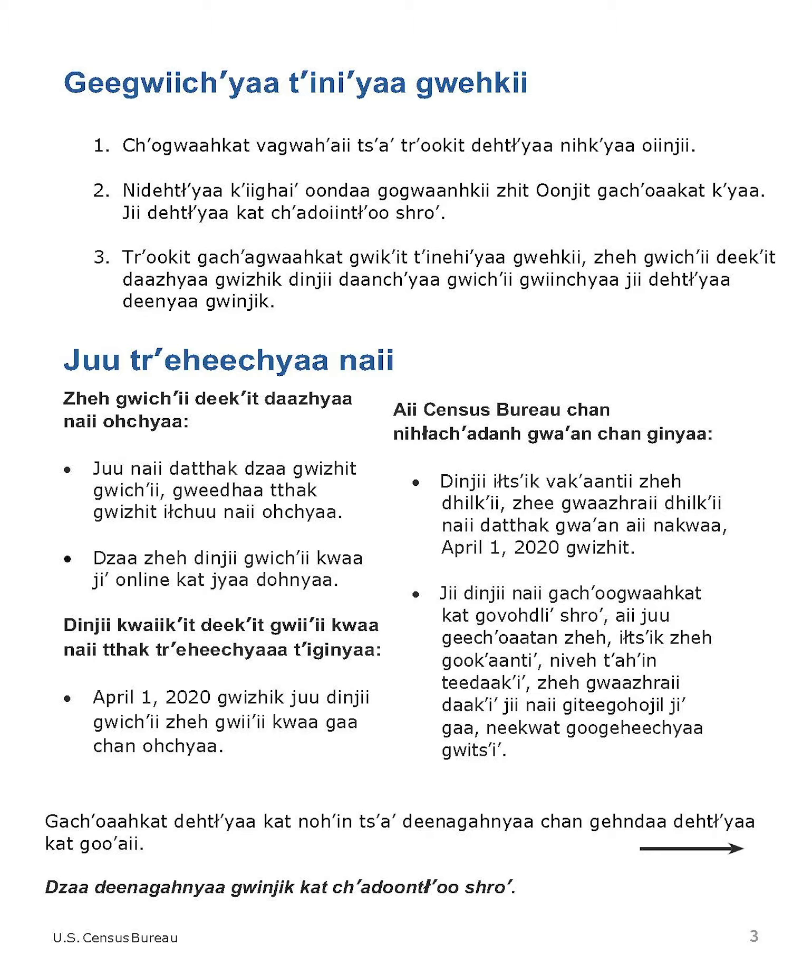The census also conducts counts in institutions and other places. Do not count anyone in a nursing home, jail, prison, or detention facility on April 1, 2020. Leave these people off your questionnaire, even if they will return to live here after they leave college, the nursing home, the military, jail, etc. Otherwise, they may be counted twice.